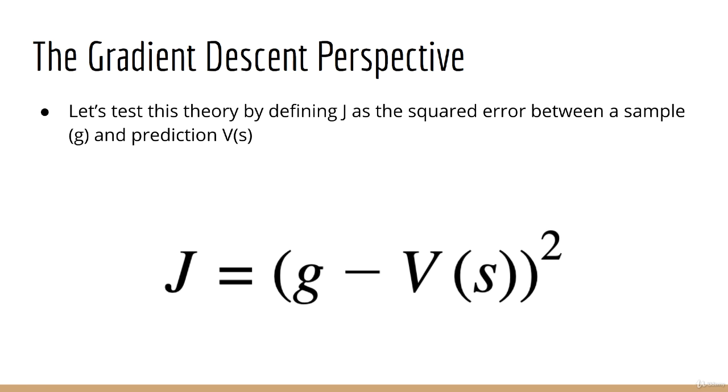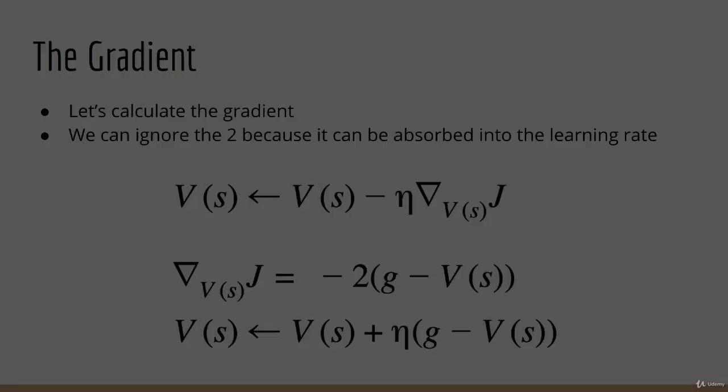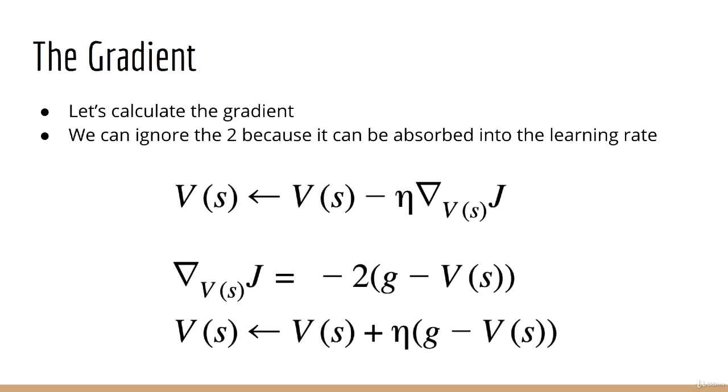Well, why not test out this theory? Let's set our squared error J to be the squared error between my true target g and my value for the state s, V(s).